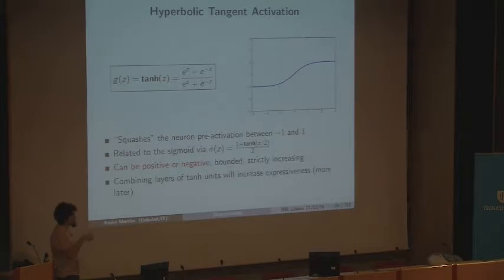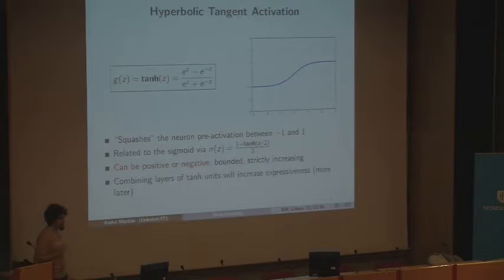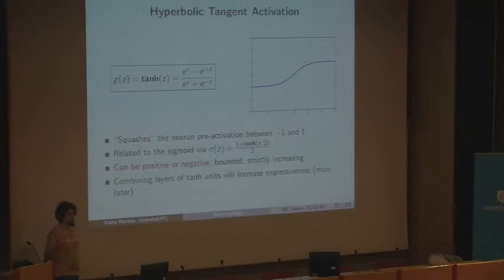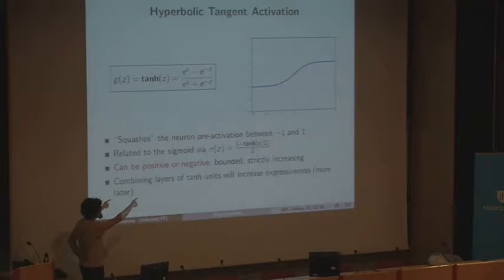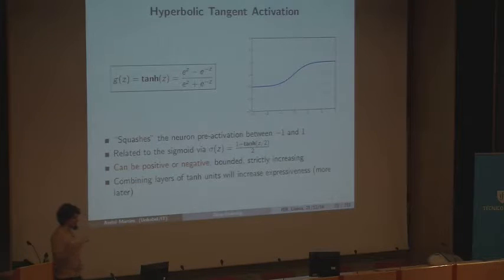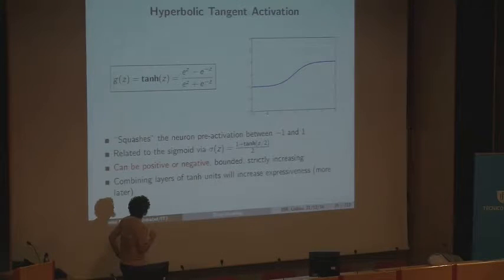The other activation function that is very used in neural networks is the hyperbolic tangent, or tanh, which is very similar to the sigmoid, except that the output, instead of being squashed between zero and one, it's squashed between minus one and one. But the shape of the function is essentially the same. In fact, the two are related by this linear expression: the sigmoid equals one half of one plus the tanh of Z over two. An important difference with respect to the sigmoid is that tanh is not strictly positive — it can be positive or negative — but it's also bounded and strictly increasing.